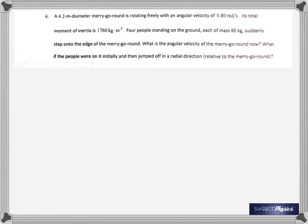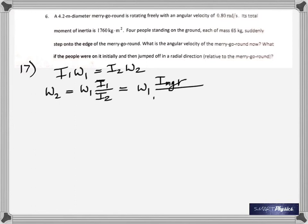When they step onto the edge, definitely each one is adding to the moment of inertia of the system. Each one is going to add mass times the radius squared, so you've got to multiply that with four. Again, the conservation of angular momentum, because they just step onto the edge, assuming that there is no external torque. I1 omega 1 equals I2 omega 2, and we are asked to find omega 2.